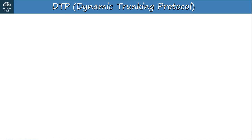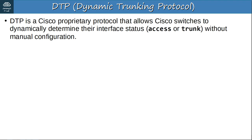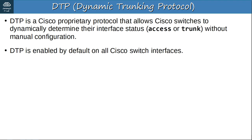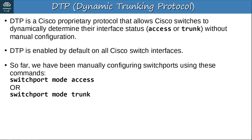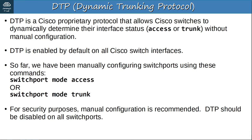DTP is a Cisco proprietary protocol that allows Cisco switches to dynamically determine their interface status — access or trunk — without manual configuration. Two Cisco switches connected together can form a trunk; otherwise the interface will automatically be an access port. DTP is enabled by default on all Cisco switch interfaces. For security purposes, manual configuration is recommended and DTP should be disabled on all switchports, as DTP can be exploited by attackers.